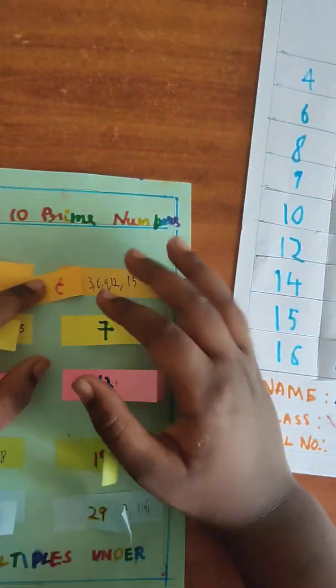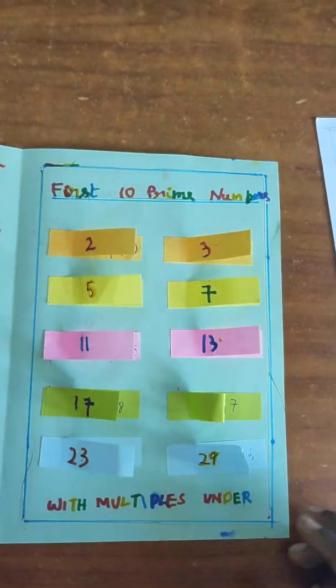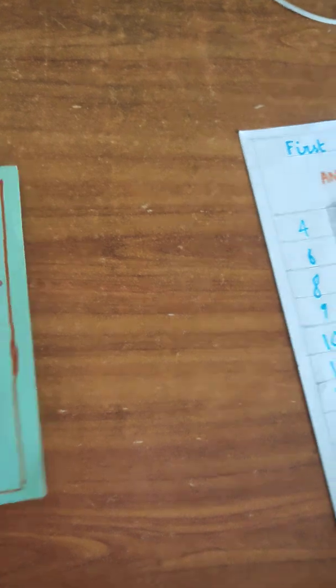Now, the multiples of 3 are 3, 6, 9, 12, and 15. Okay. Now, let's close the book. On to the next activity.